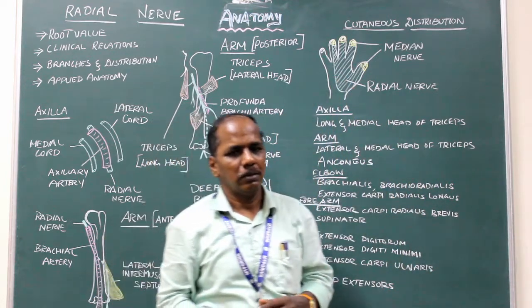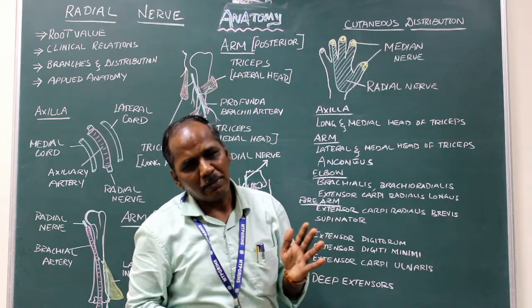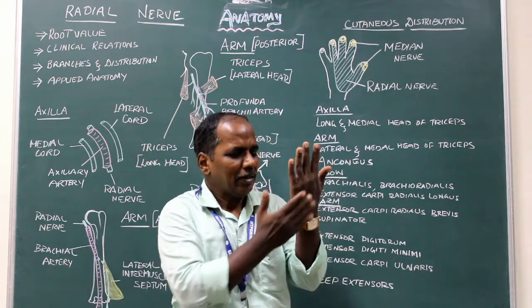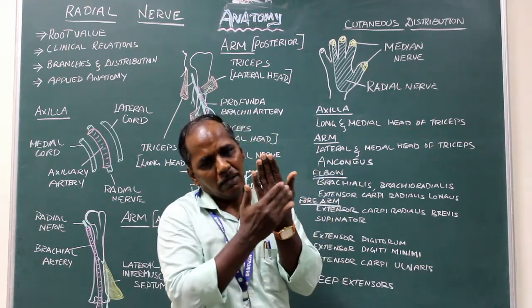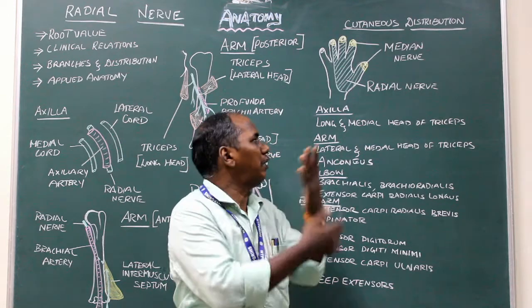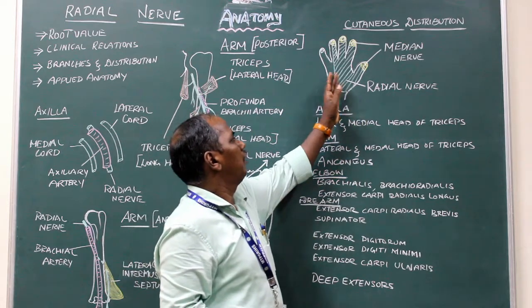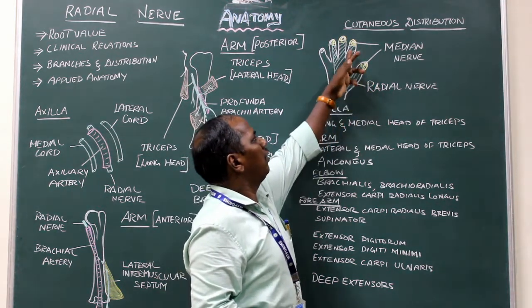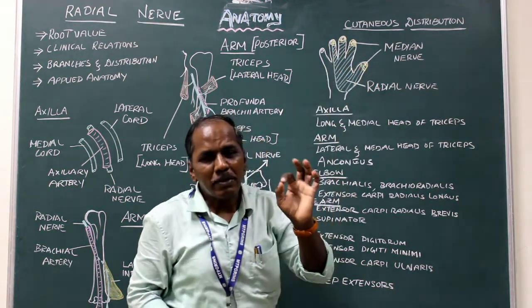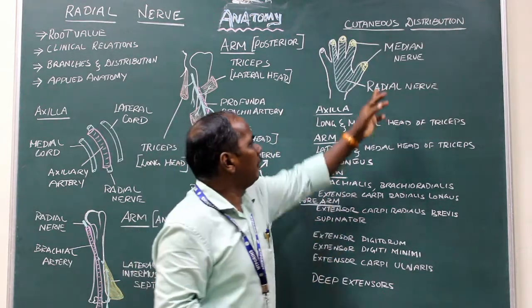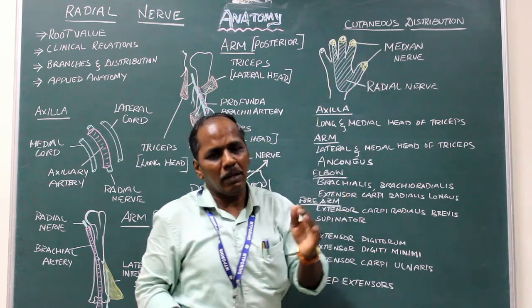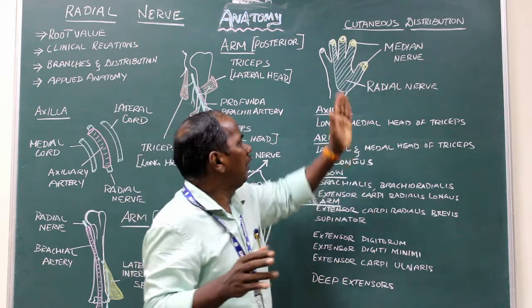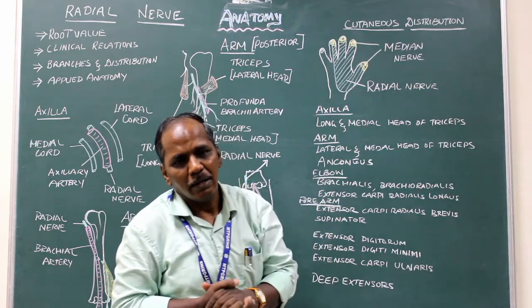In the hand, it gives a cutaneous branch which supplies the skin over the dorsum of the lateral half of the hand and the lateral three and a half fingers, excluding the terminal phalanges — because the terminal phalanges on the dorsal aspect of the lateral three and a half fingers are supplied by the median nerve. The lateral three and a half fingers are supplied by the radial nerve.